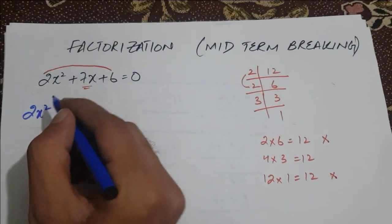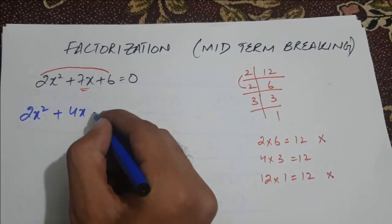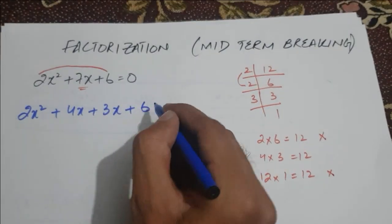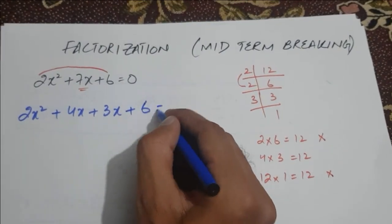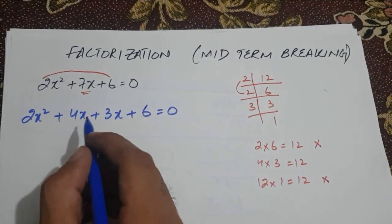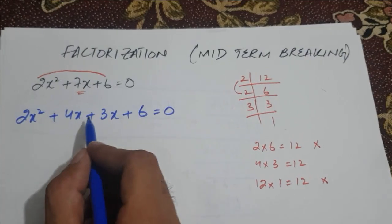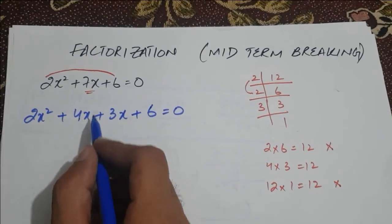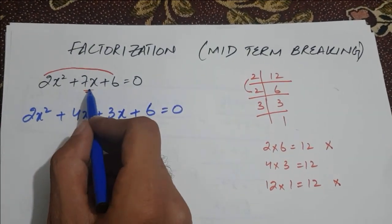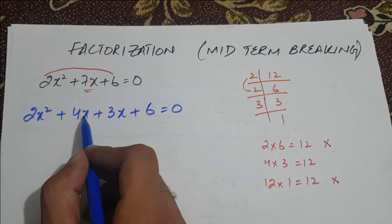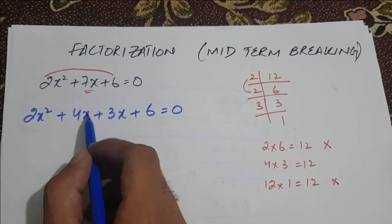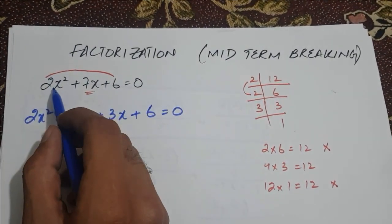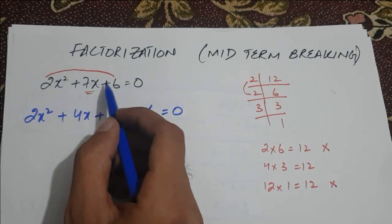We write it as 2x² + 4x + 3x + 6 = 0. Remember that the sum of these two factors must be the middle term, and the product of these two factors must be the product of 2x² and 6.